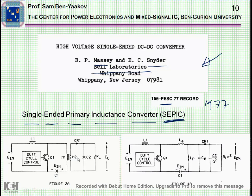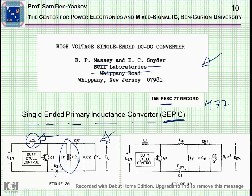The name comes from the circuit that Massey and Snyder worked on — there is a transformer here, and the inductor is on the primary side, hence the name Single Ended Primary Inductance Converter. The paper described the transformer-isolated version, which has many merits because there is galvanic isolation between input and output, making it really suitable for power line applications. But they did not work on the non-isolated version that we talked about.